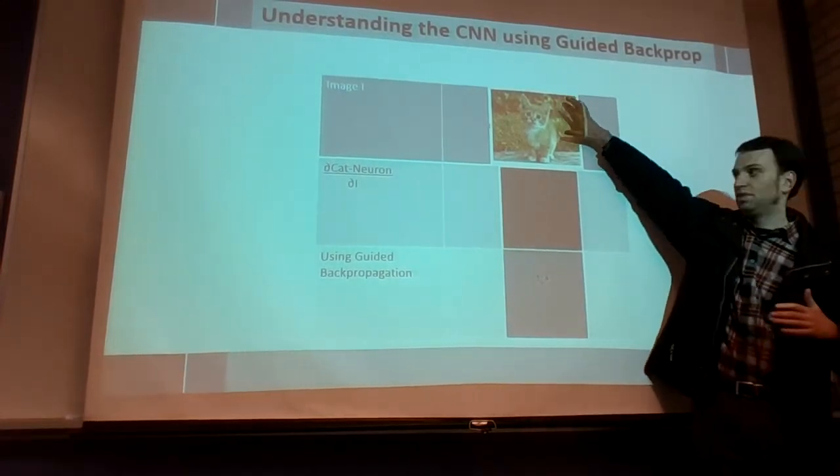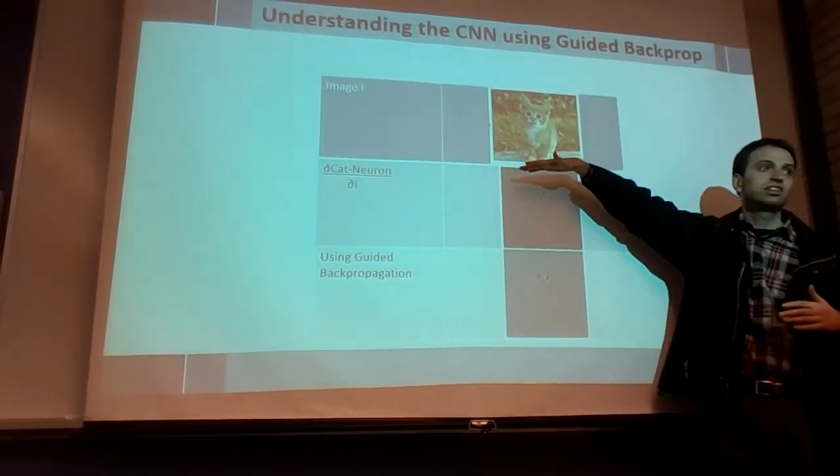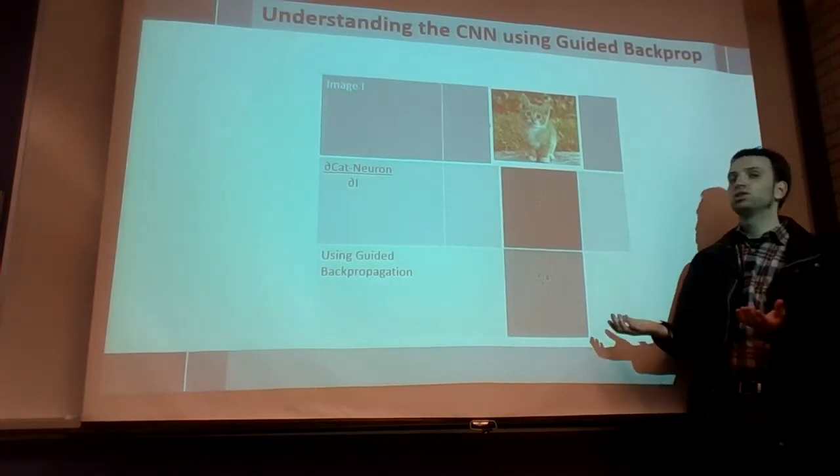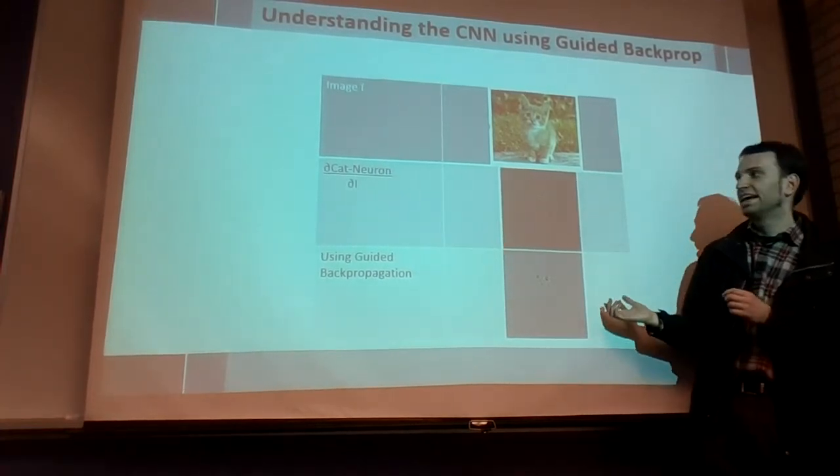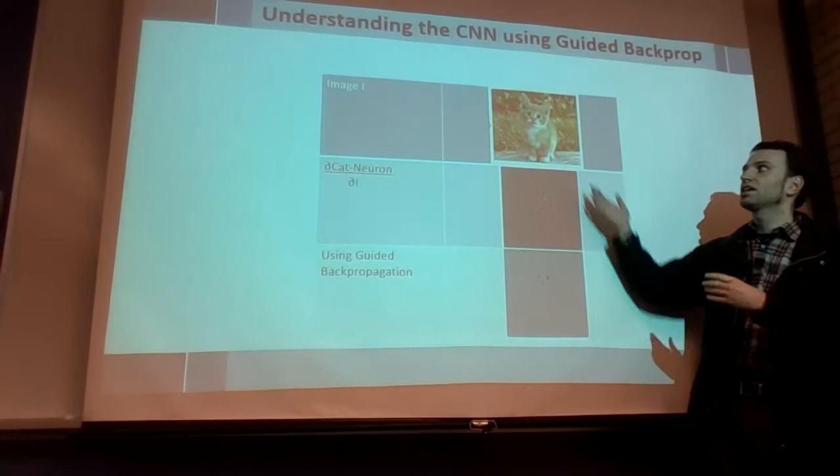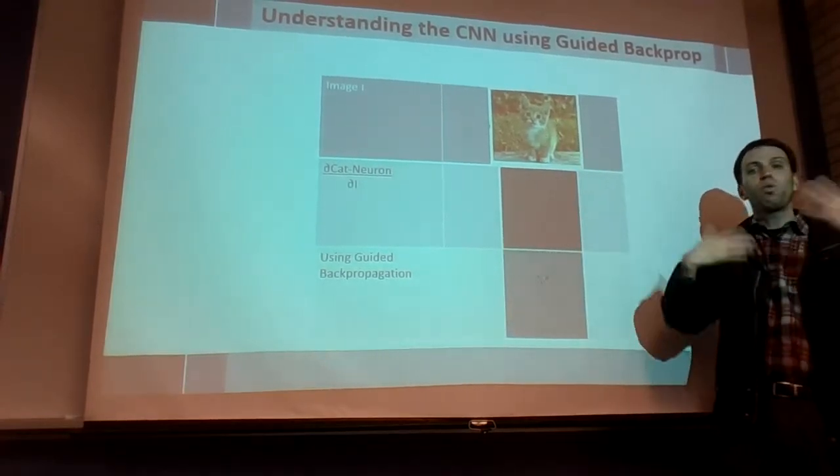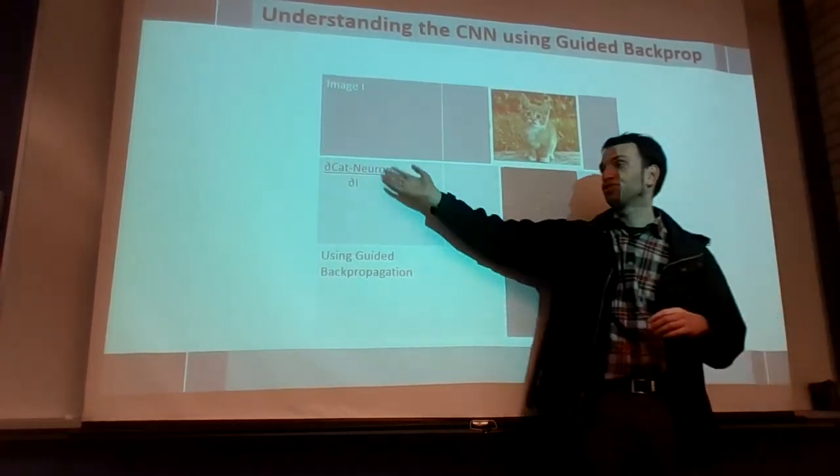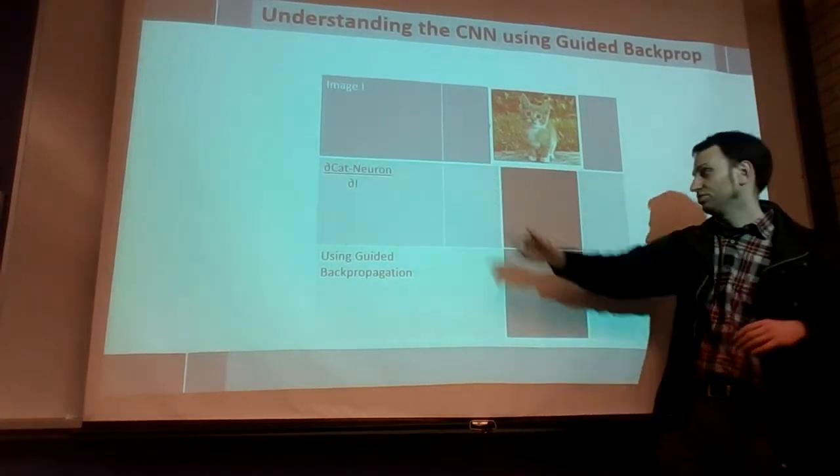So let's say that you have an image I, and cat neuron is high, and what you want to do is you want to explain why it is that the cat neuron is high for this image. So one thing you could do is you could just compute the gradient of the cat neuron with respect to the input.